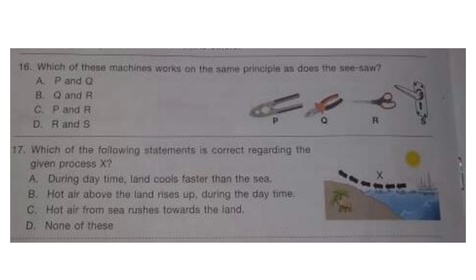Question 16: Which of these machines work on the same principle as the seesaw? Look at the figure and select your answer. The correct answer is option B: Q and R. Both Q and R are first-class levers, just like the seesaw.